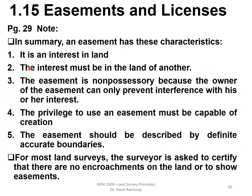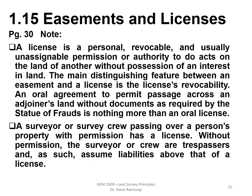For most land surveys, the surveyor is asked to certify that there is no encroachment on the land or to show any easements in evidence. On page 29, a good definition of a license is provided. A license is a personal, revocable, and usually unassignable permission or authority to do acts on the land of another without possession of an interest in the land. An example would be obtaining a license to hunt on someone's property.